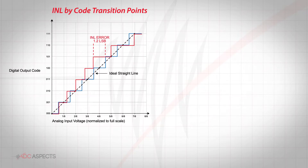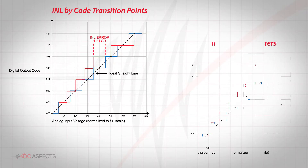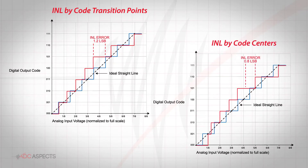INL may be expressed in LSBs or as a percentage of the full-scale range. It is also important to note that there are several ways to calculate INL. The INL can be specified by the code transition points, also known as low side transition, or through the code centers.